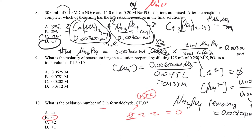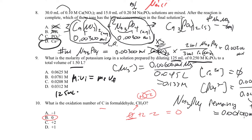Moving to problem 9: what is the molarity of potassium ions in a solution prepared by diluting 125 mL of 0.25 molar K₃PO₄ to a total volume of 1.50 liters? This is a dilution problem — perfect for using M₁V₁ = M₂V₂. Converting to liters: 0.125 L × 0.25 M = M_f × 1.50 L. Note: it says diluted to a total volume of 1.5 L, not that we added 1.5 L of water.